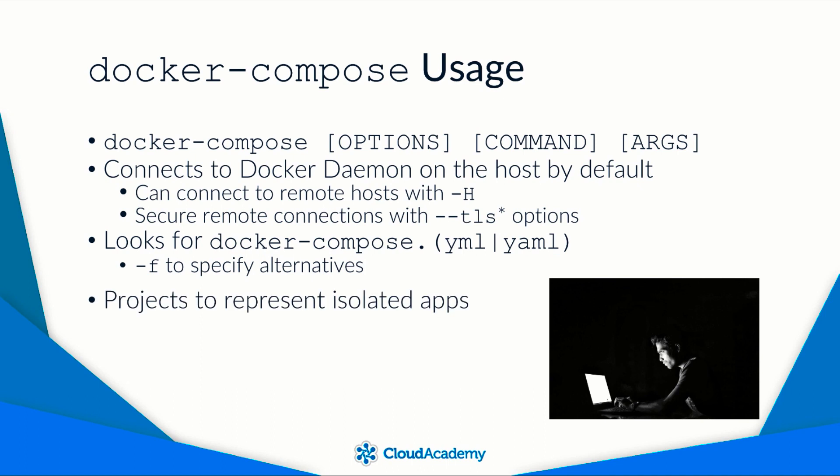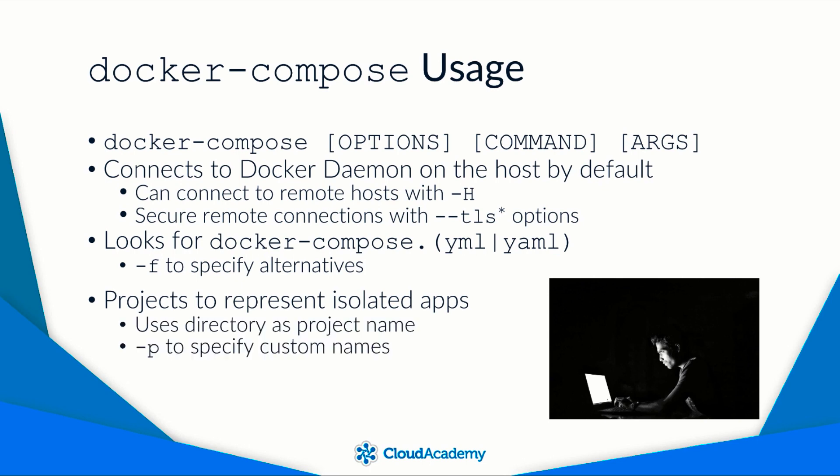Each isolated application is associated with a project in Compose. The project is given a name that appears in resources created by Compose. For example, the names of networks and containers created by Compose begin with the project name, followed by an arbitrary name key declared in the Compose file. The default project name is the name of the directory containing the Compose file, but you can assign a custom project name using the -p option.